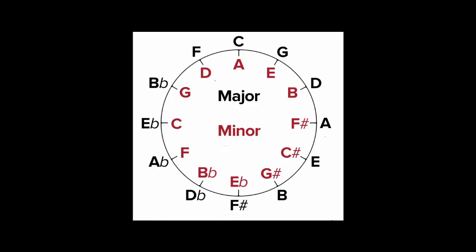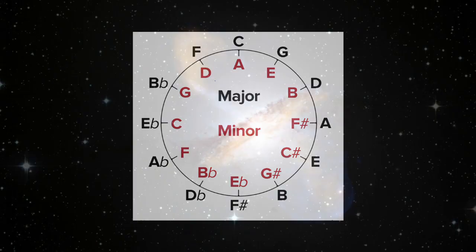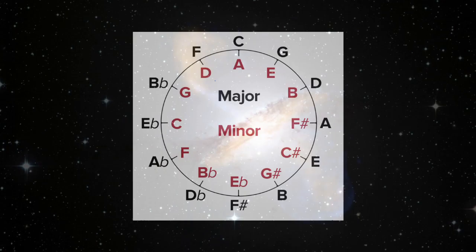The circle of fifths is generally a really great way to visualize tonal music, and it helps a lot here. Basically, if we want the chords to sound like space, where everything is big and far apart, the chords should be far apart. So if we start in C, here are our options.